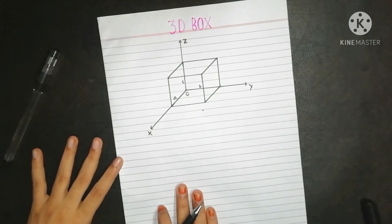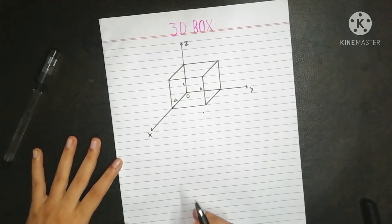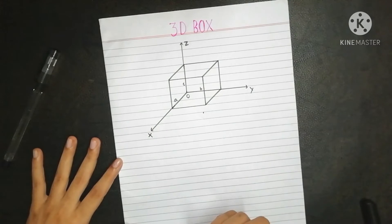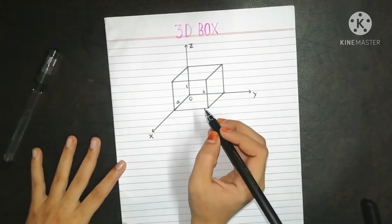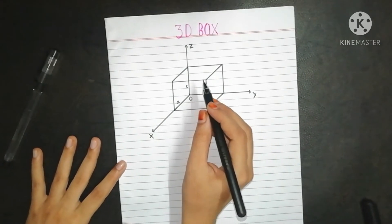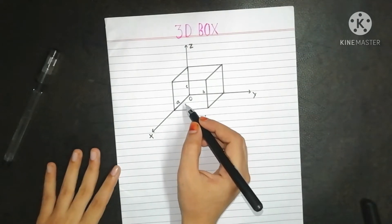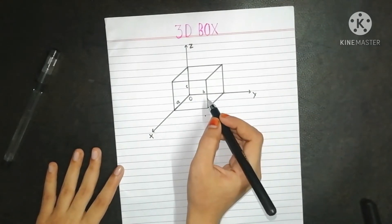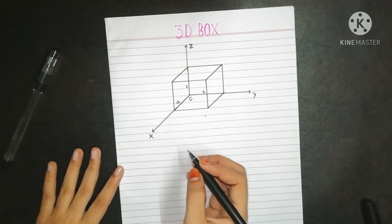Consider the motion of a particle of mass m in a 3D potential box which is rectangular in shape. The particle is free to move along x, y, and z directions. The distance it will cover along the x-axis will be a, along y will be b, and along z will be c. So the region enclosed for motion is defined accordingly.